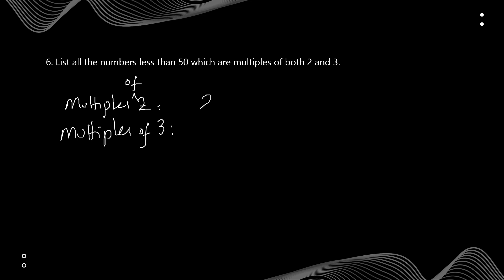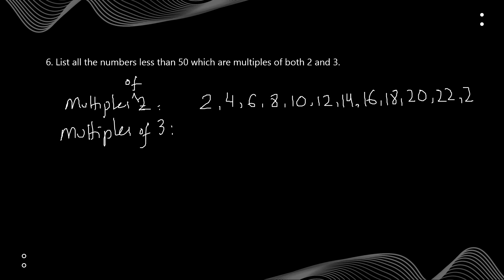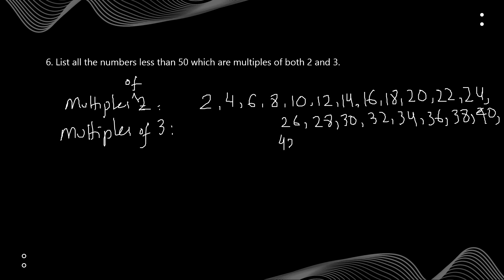For 2, we write: 2, 4, 6, 8, 10, 12, 14, 16, 18, 20, 22, 24, 26, 28, 30, 32, 34, 36, 38, 40, 42, 44, 46, 48. We can't write 50 because 50 is not included — the question says less than 50.